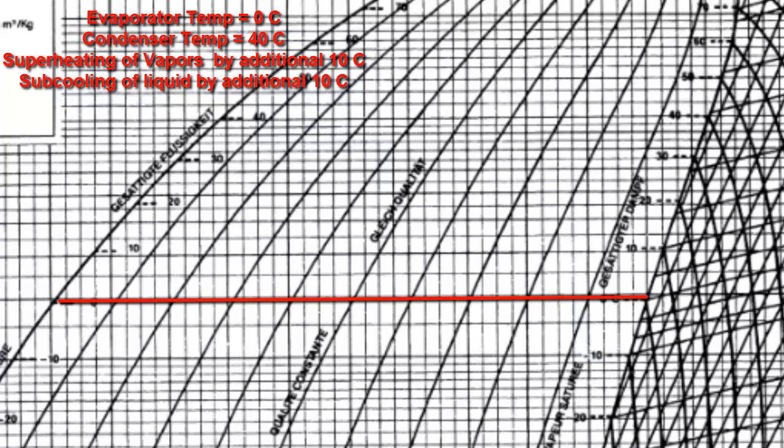First, we will draw a line for the evaporator temperature, which is 0°C, shown on the saturated liquid curve. We draw a horizontal line until it meets the saturated vapor curve. However, we will need to extend this line further into the superheated region because the vapors leaving the evaporator are superheated by an additional 10°C.